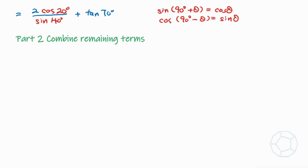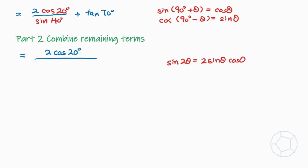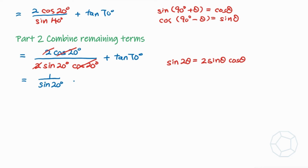In part 2 of the detailed solutions, we combine the remaining terms. We have 2 cosine 20 degrees in the numerator, and in the denominator sine 40 degrees. Applying the double angle formula sine(2 theta) equals 2 sine theta cosine theta, we change 40 degrees to 20 degrees, giving 2 sine 20 degrees cosine 20 degrees. We cancel out 2 and cosine 20 degrees, so the fraction becomes 1 over sine 20 degrees.